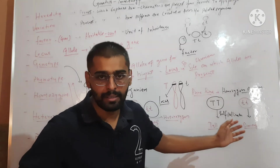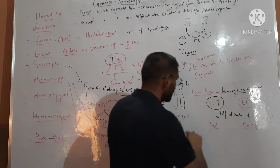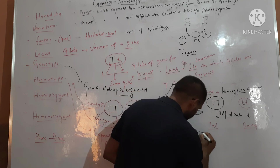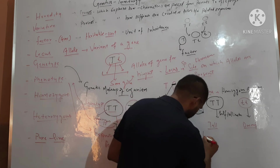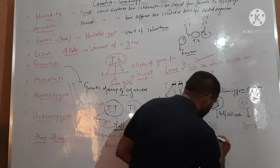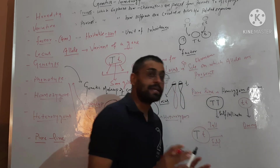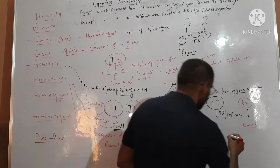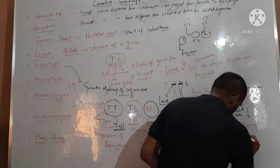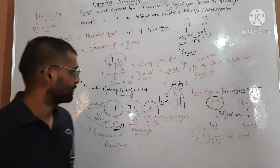Hybrid line. In hybrid line, alleles are different for the same gene, so this will be called hybrid line. When we self it, it will produce a ratio of tall and dwarf.